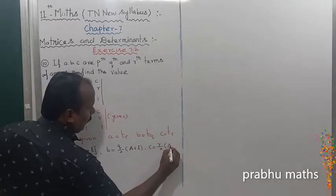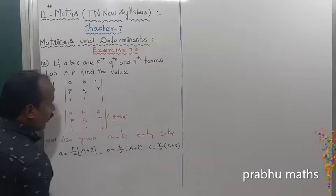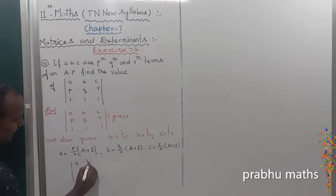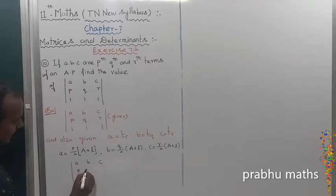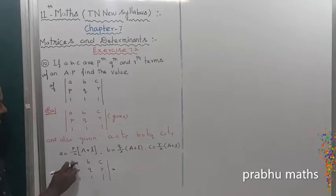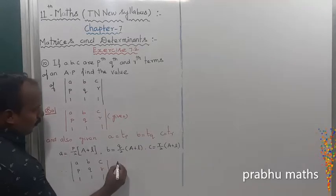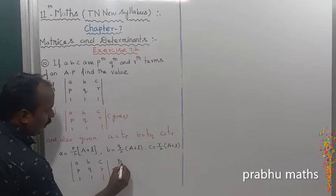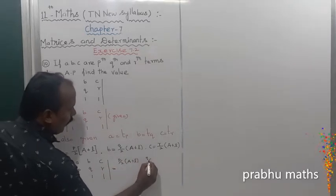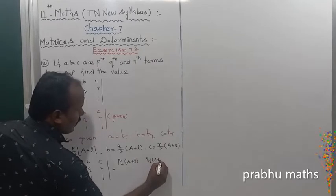Therefore, the determinant equals p, q, r; 1, 1, 1. That is equal to a replaced by this value, which is p/2(a + l). Next q/2(a + l).